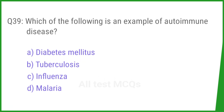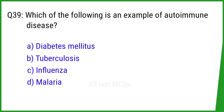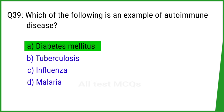Question number 39. Which of the following is an example of an autoimmune disease? The right answer is option A: Diabetes mellitus.